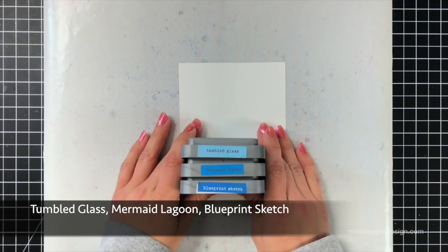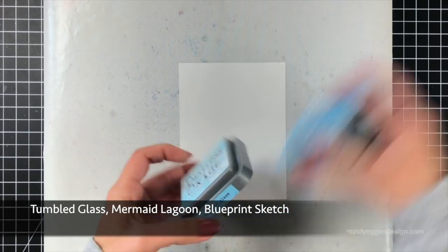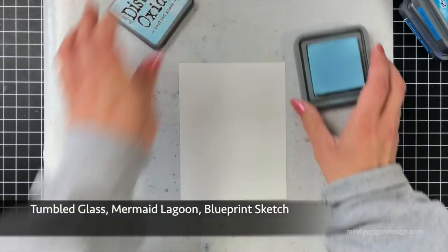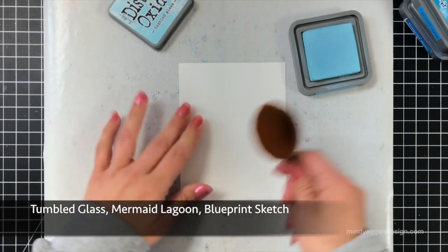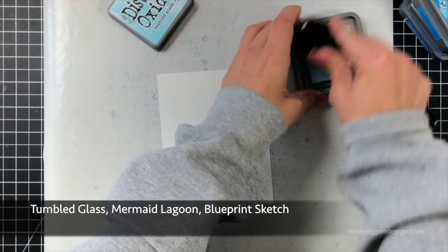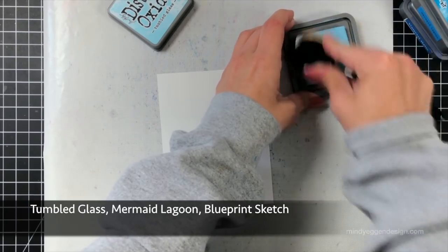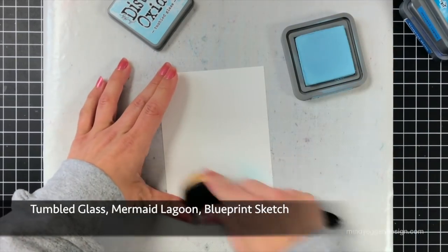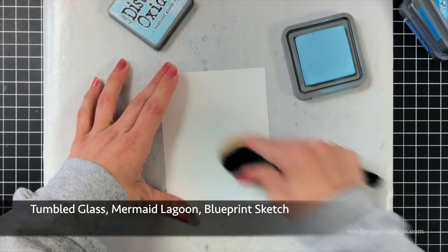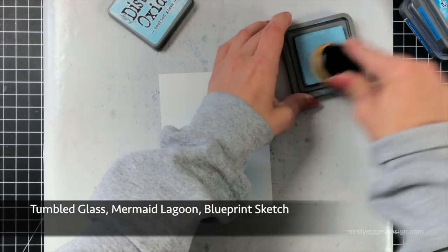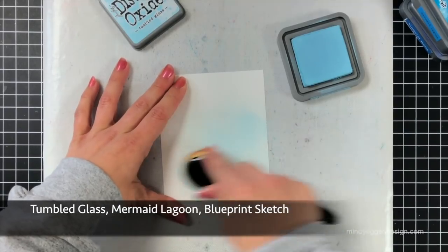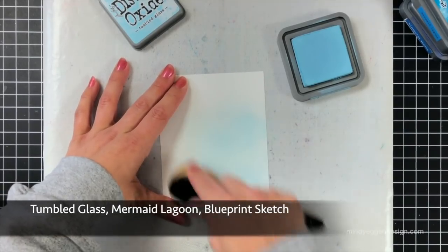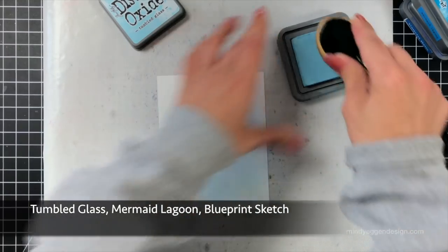So the first thing I'm going to want to do is I'm creating a background for my frame. I'm using Distress Oxides for this and I'm also using the Gina K Designs Layering White Cardstock. So the first one I'm starting off with is Tumble Glass and this is just a really nice light blue. So I'm taking my life-changing blender brushes from Pink Picket Fence Studios and I'm just adding a really light color down onto my cardstock.